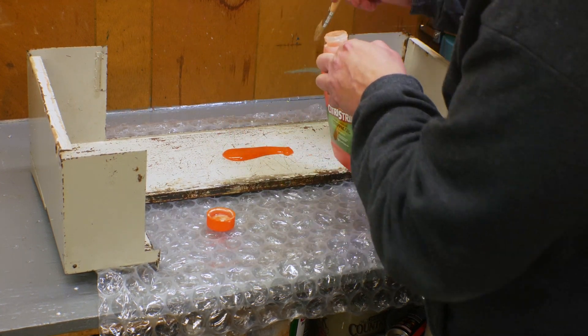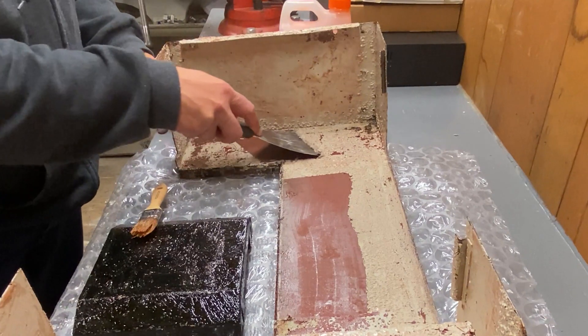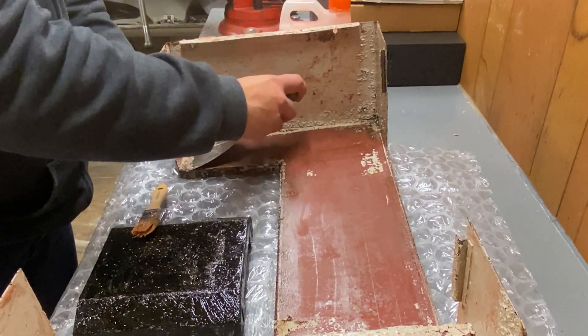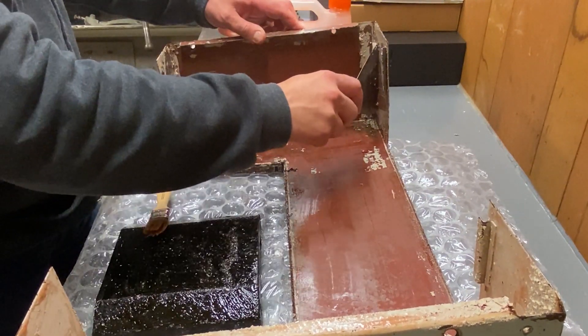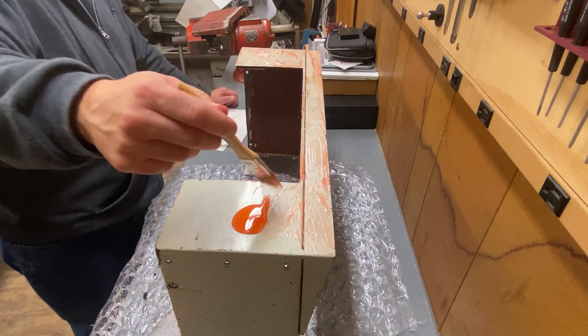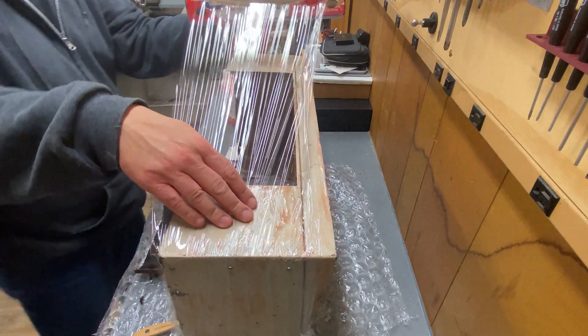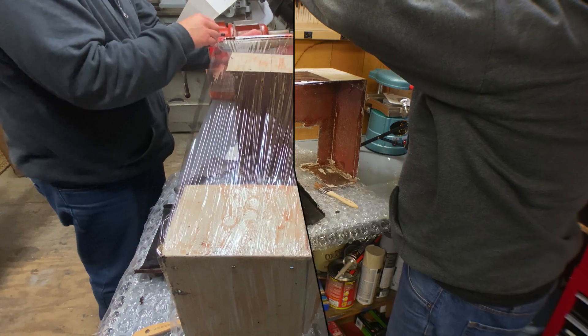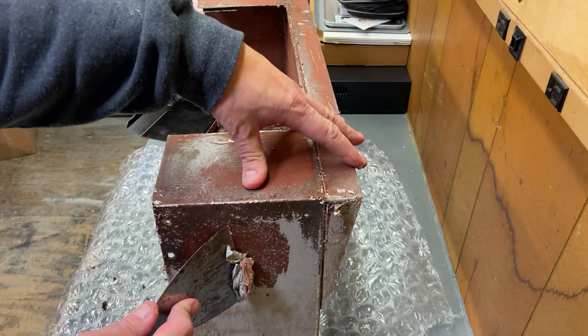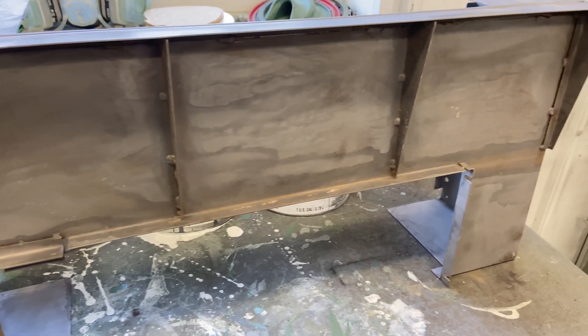I decided that I wanted to throw a new coat of paint on this guard before installing it. I've been pretty happy with this citrus strip, and I'll leave a link to it as well as some of the other products I've used in this video down in the video description. If you like this kind of content, don't forget to hit that subscribe button. It really helps the channel out, and I would certainly appreciate it.